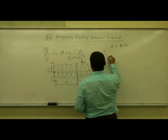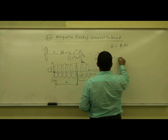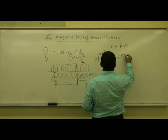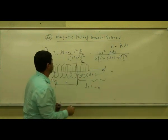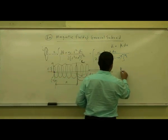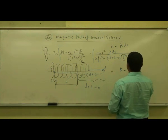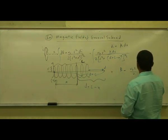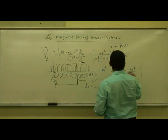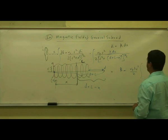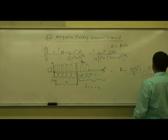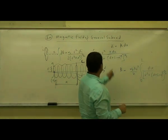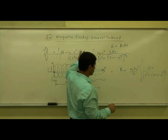So we have mu_0 r squared over 2, divided by (D plus L minus x) squared to the three-halves, times lambda dx. Integrating, B equals mu_0 r squared lambda over 2, times the integral from 0 to L of dx divided by (r squared plus (D plus L minus x) squared) to the three-halves.